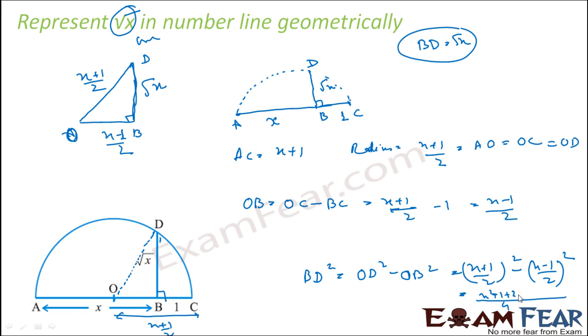You get x square plus 1 plus 2x minus x square plus 1 minus 2x. This is cancel. You get 4x by 4, and that is nothing but x. So BD square is x. So BD is root x. And thus I get root x here.